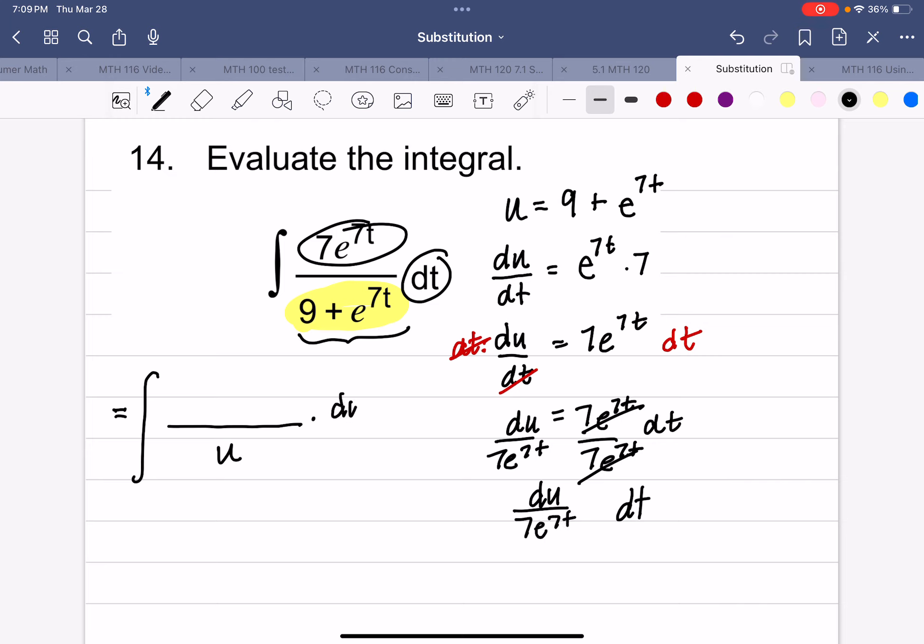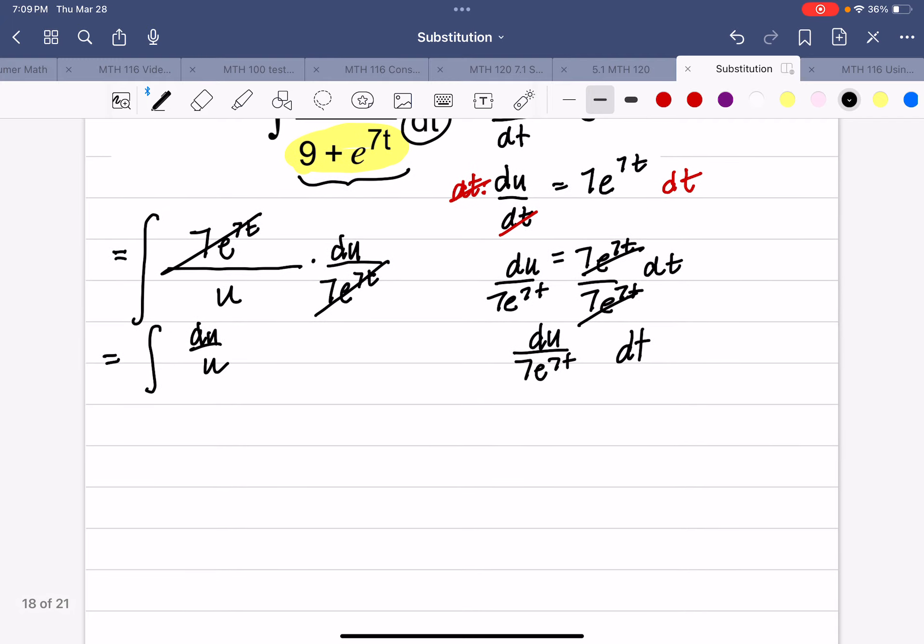So du over 7e^(7t). And so look, here's this 7e^(7t). Well, those are going to divide out, and I'm going to get the integral of du over u. Everything's in terms of u's now. So this is the integral of 1 over u du.